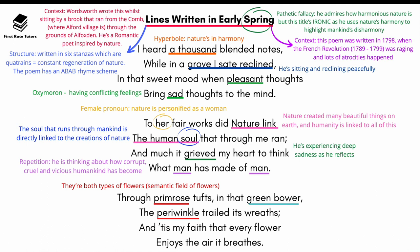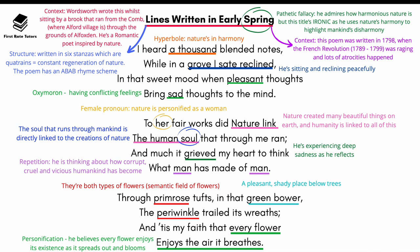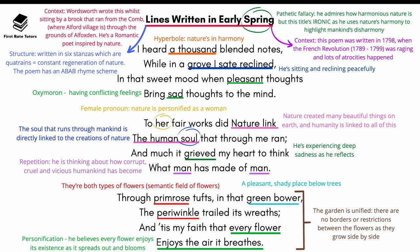In the third stanza, Wordsworth mentions the primrose and the periwinkle — both types of flowers — using language from the semantic field of flowers. A 'green bower' refers to a pleasant shady place beneath trees. When he says 'tis my faith that every flower enjoys the air it breathes,' he is personifying the flowers, believing that every flower enjoys its existence as it spreads out and blooms — a huge harmony witnessed within nature.